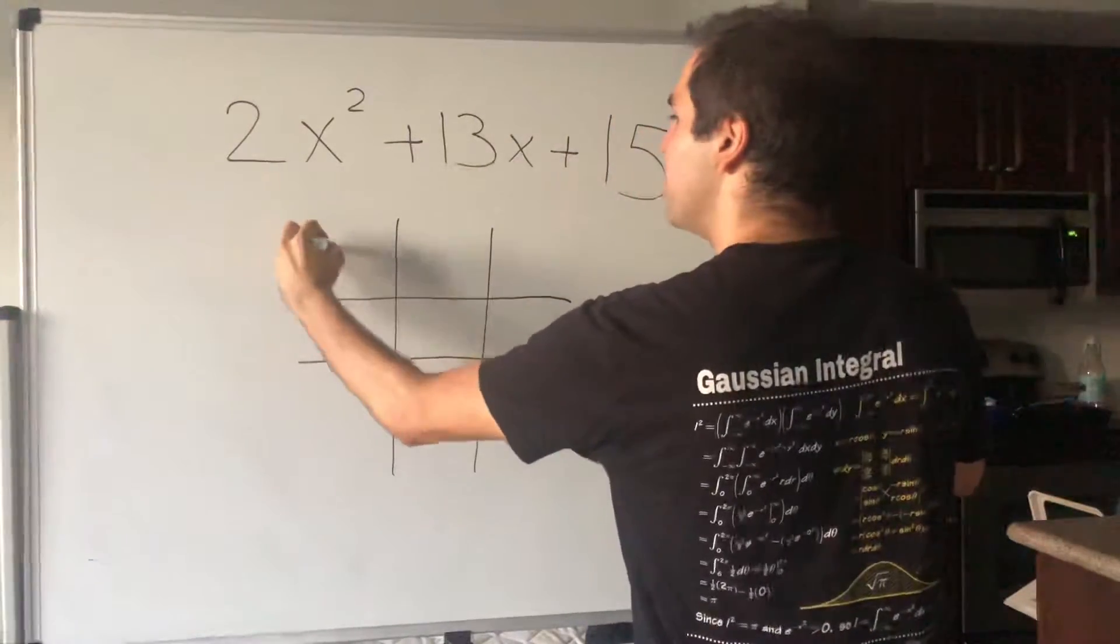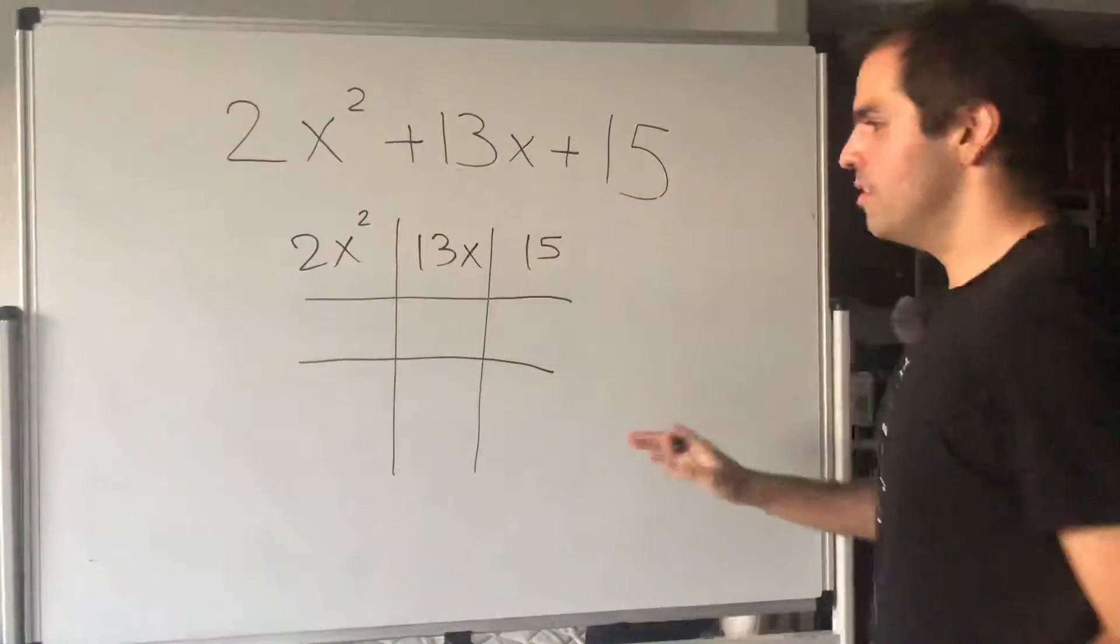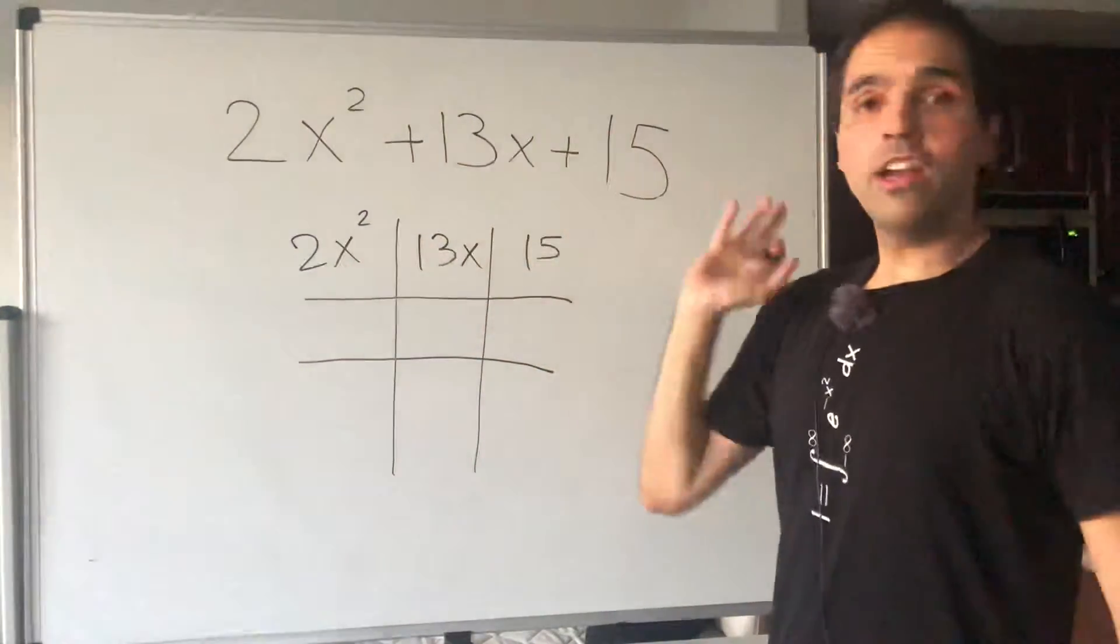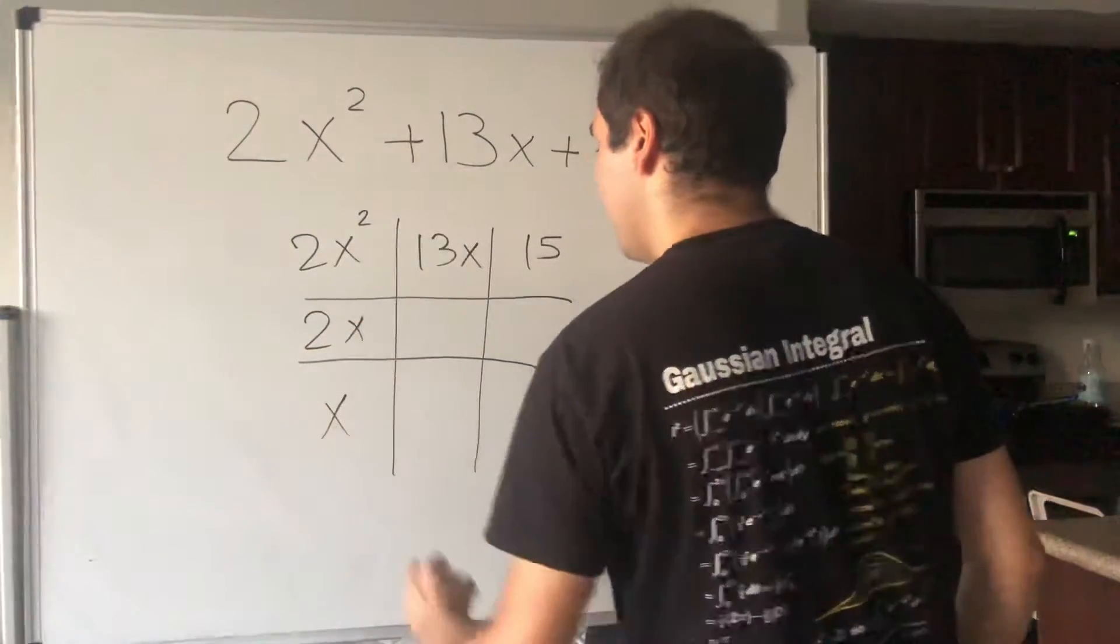On the top, you write 2x squared, 13x, and 15. And here, you want to write 2x squared as a product of two things. Let's say 2x and x.